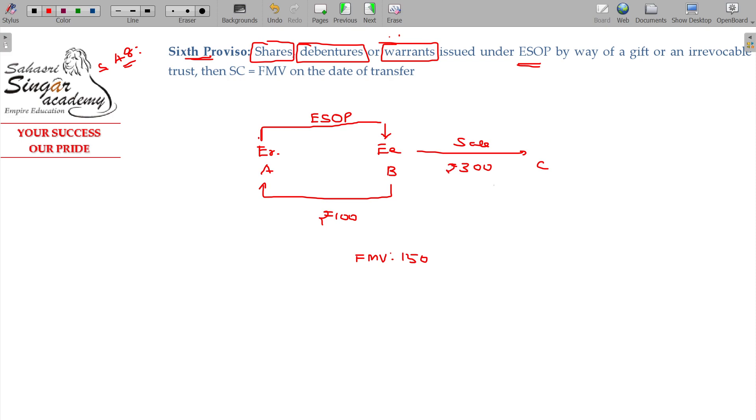Employee stock option plan in general, shares allotted. 100 rupees, shares are 150 allotted. This will be perquisites under Section 17, Class 2. We have studied already, right? Salary chapter in general, the ESOP chapter.